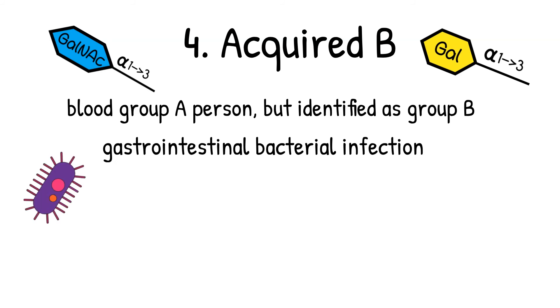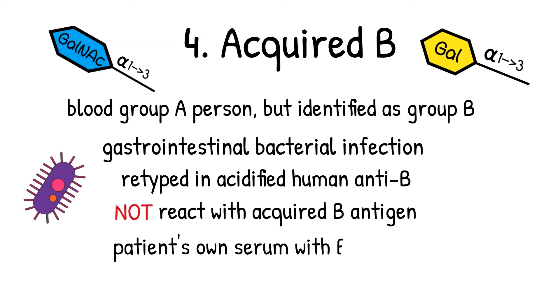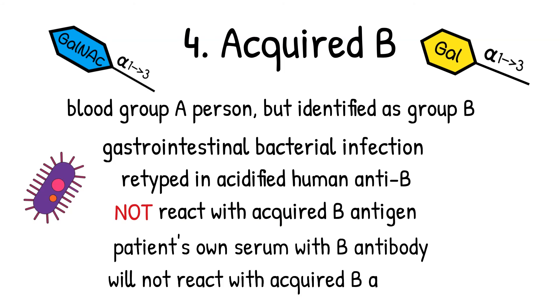The acquired B phenotype shows strong agglutination with anti-AB and weak agglutination with monoclonal anti-B. Solve this problem by retyping using acidified human anti-B. Acidified human anti-B does not react with acquired B antigens. Also test the patient's serum with their own red blood cells because the patient's own anti-B will not react with the acquired B antigens on their own red blood cells. If you want to know more about acquired B, please feel free to let me know in the comment down below.